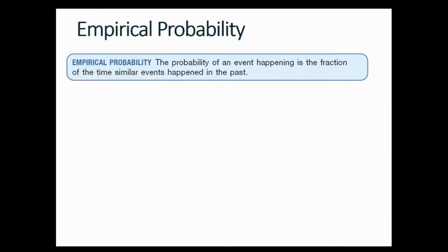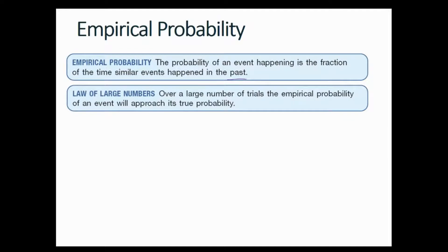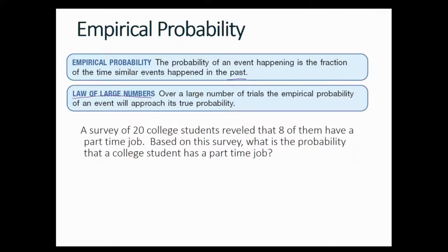The empirical probability approach says the probability of an event happening is the fraction of the time similar events happened in the past — it's based on past data. This is related to the law of large numbers: over a large number of trials, the empirical probability of an event will approach its true probability. So the bigger the sample, the more accurate your information will be.